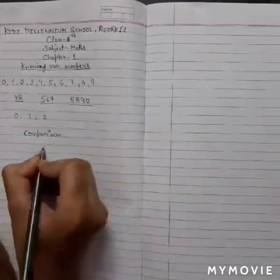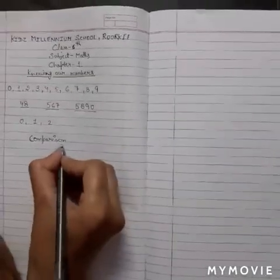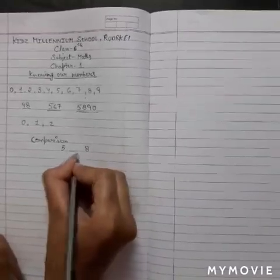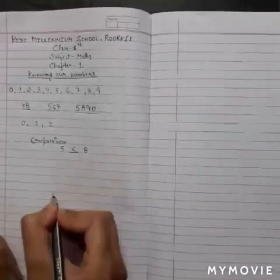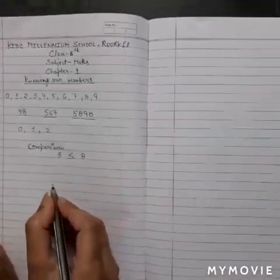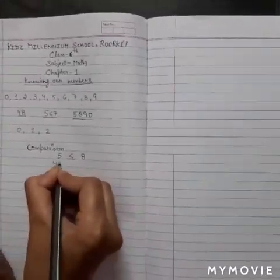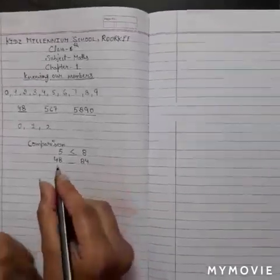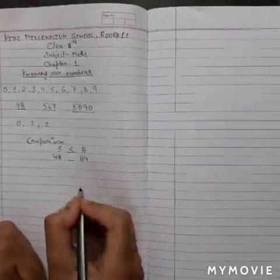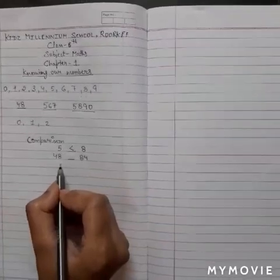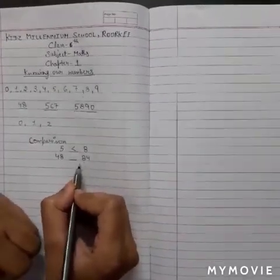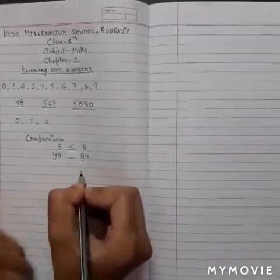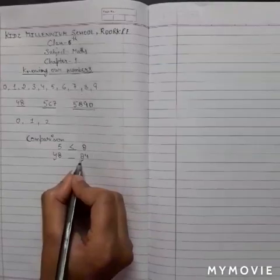Let's understand some examples. First example: I have written number 5 and number 8. You know that 8 is greater than 5. Now for two-digit numbers, how do we compare? I will show you the first place to compare. You will see that here is 4 and here is 8, meaning 8 is greater than 4.